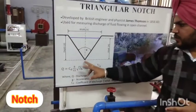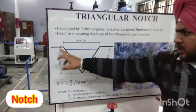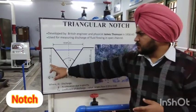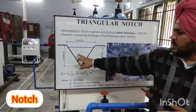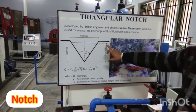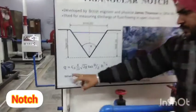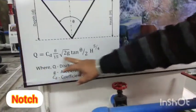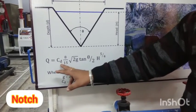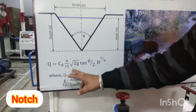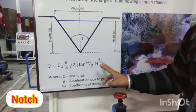This is the cross-section of the V-notch. This is the depth from the bottom to the top level, which is equal to the depth H. The angle theta is equal to 90 degrees. This is the header, which is the net rise in the level of water. The formula for calculating discharge Q is equal to CD times 8/15 times square root of 2g times tan(theta/2) times H to the power 5/2.